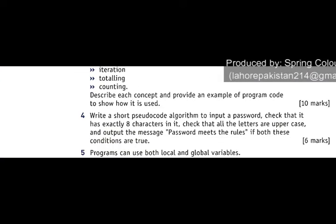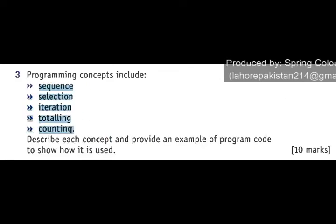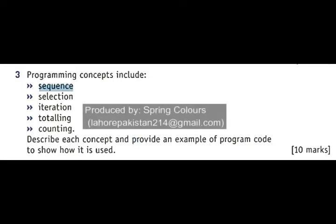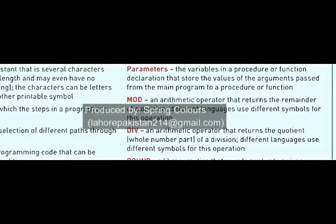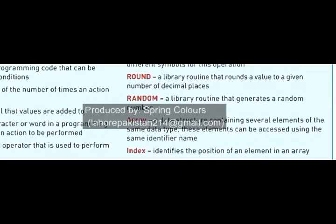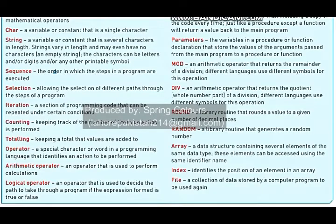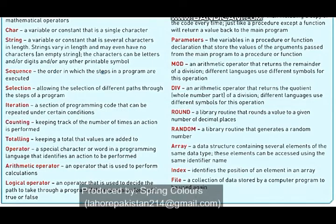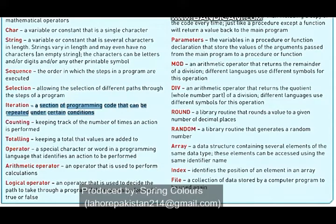The next question asks you to describe these programming concepts and provide one example of each. I have taken the definitions from your glossary on page number 336. Sequence refers to steps in a program that are in order. Selection means making a decision between different options. In iteration you repeat a specific part of a program again and again.